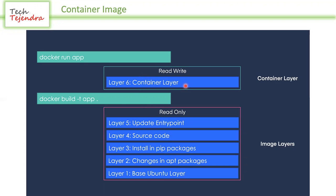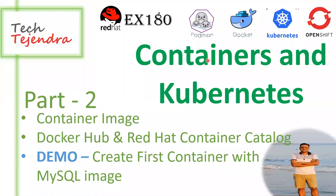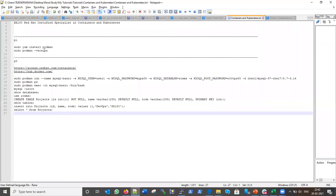This is the benefit of using layered architecture — we can fit our layer in between. For example, when I launch another version of my application, I will use the existing image as the base image and then create more layers on top of it. So that's the benefit of layers architecture. Now let's discuss Docker Hub and Red Hat. Let me show you Docker Hub first — the URL is hub.docker.com.